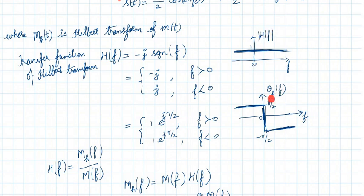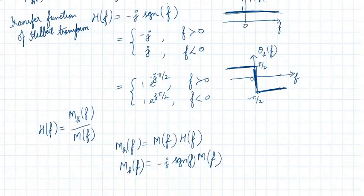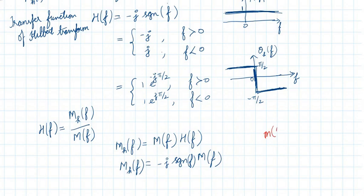We plot the magnitude |H(f)| and angle θ_H(f) of the Hilbert transfer function. The magnitude is always 1 — both |−j| and |j| equal 1. For the angle: at negative frequencies it is +π/2, and for f > 0 it is −π/2. These are the magnitude and phase characteristics of the Hilbert transfer function.